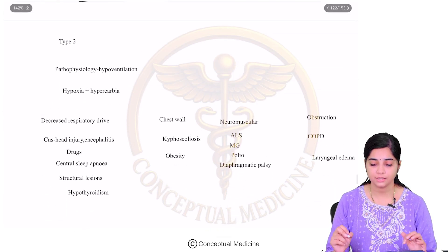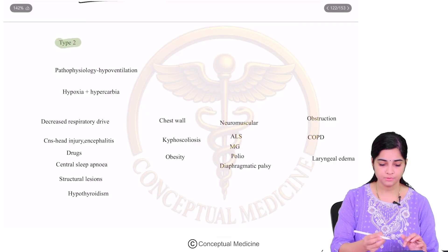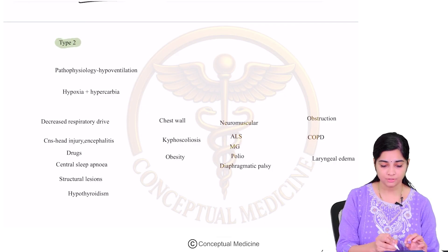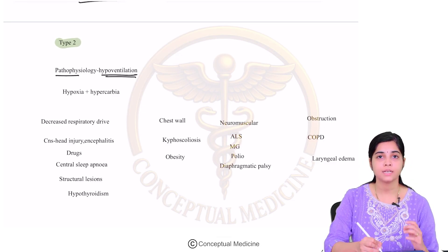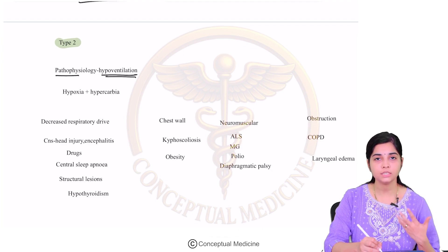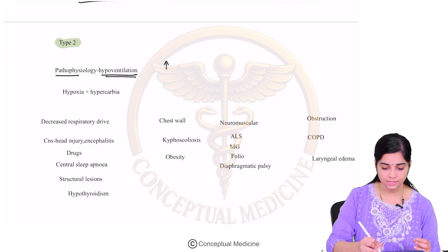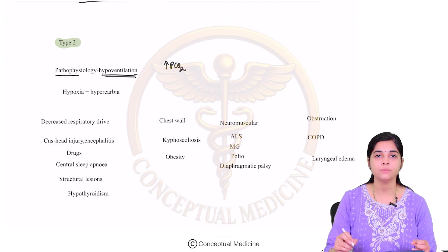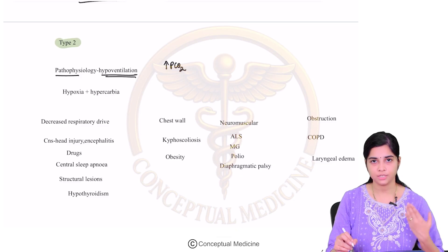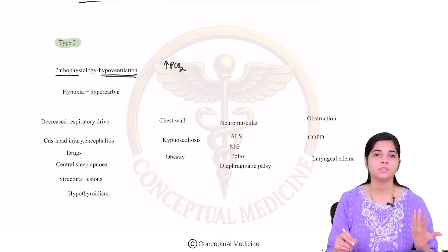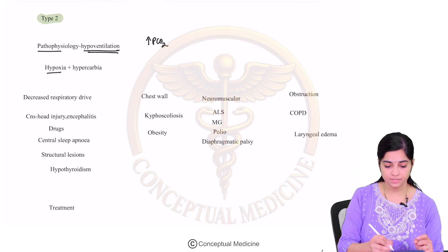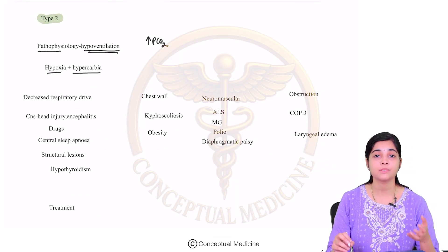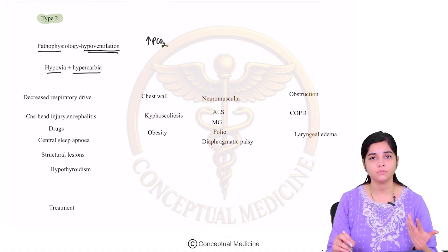Now let us look at type 2 respiratory failure. Type 2 is characterized by hypoventilation — there is a decrease in ventilation, leading to increased accumulation of carbon dioxide. The patient is not able to breathe well and cannot remove carbon dioxide from the body. Over time they develop hypoxia as well — so there is hypoxia plus hypercarbia, with increased carbon dioxide retention.